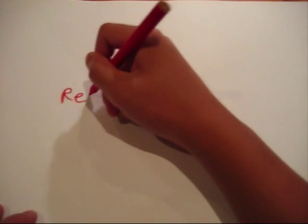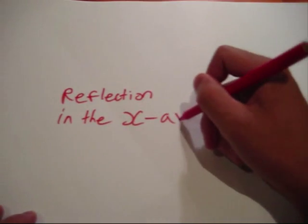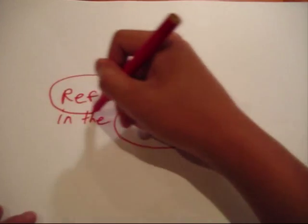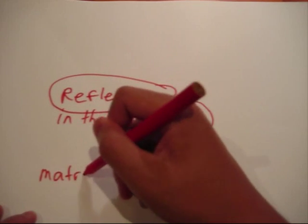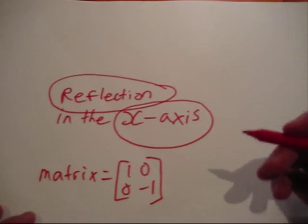Now, we are going to be redoing the reflection in the x-axis. And that formula is, the matrix formula is 1, 0, 0, minus 1.